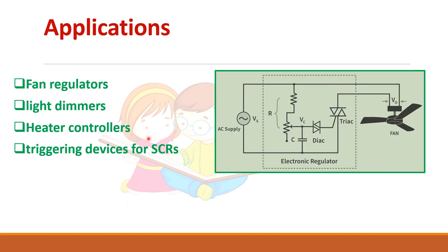The best application is the fan regulator. The supply voltage is connected to the fan through this TRIAC. TRIAC is a bi-directional device, so it can conduct during both the positive and negative half cycles. The gate of this TRIAC is connected through a DIAC.